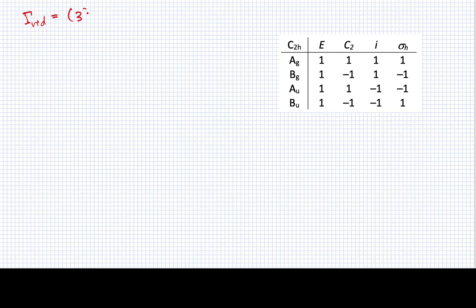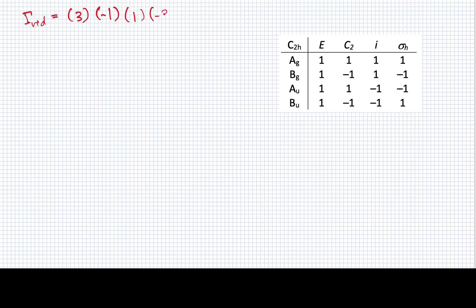I'm going to show an example related to the C2h point group. This particular example involves a reducible representation with the following characters: 3 for the identity E, negative 1 for C2, 1 for the inversion operation i, and negative 3 for sigma sub h.